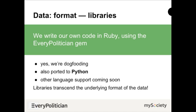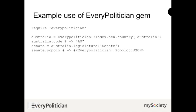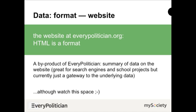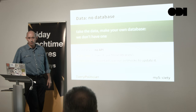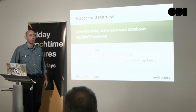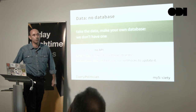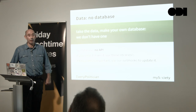The point about a library is that a developer can transcend the format the data is actually in. Using the gem, within moments you're playing with data without fiddling around wondering how to get it or whether it's the most recent — the library takes care of that. We also have a website where this data is summarised and presented as HTML, beloved of search engines, which will develop into something bigger over time. Underlying all of this is no database — we store data in JSON and CSV files, built by a build process, managed with Git.